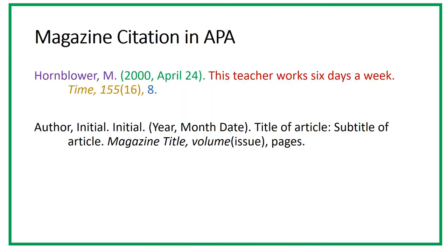After the author statement, magazine citations include the complete date of the publication, with the year, month, and date in that order and in parentheses. If you only have the month and the year, that's what's used. You can't make up anything — just include what you have.